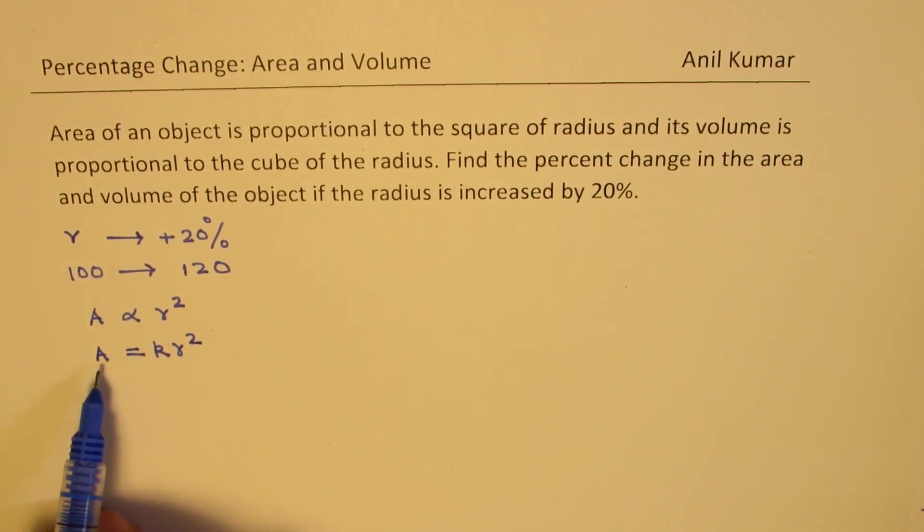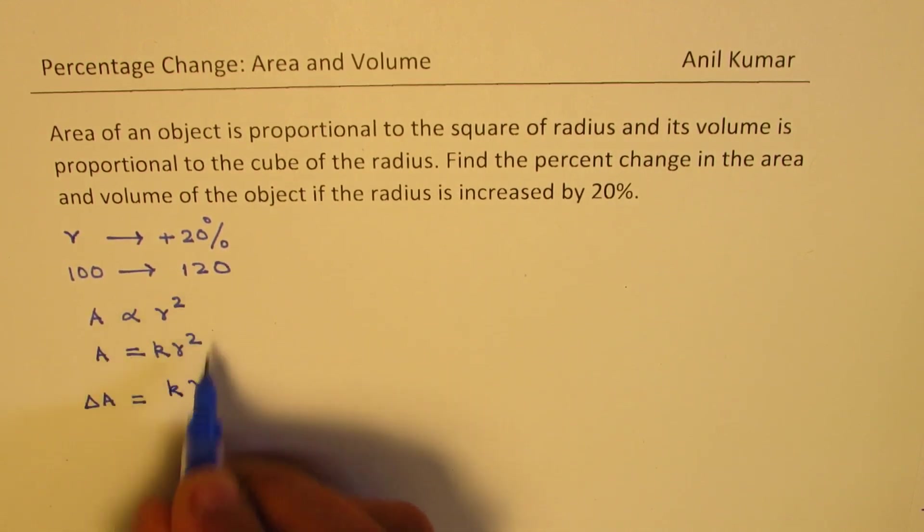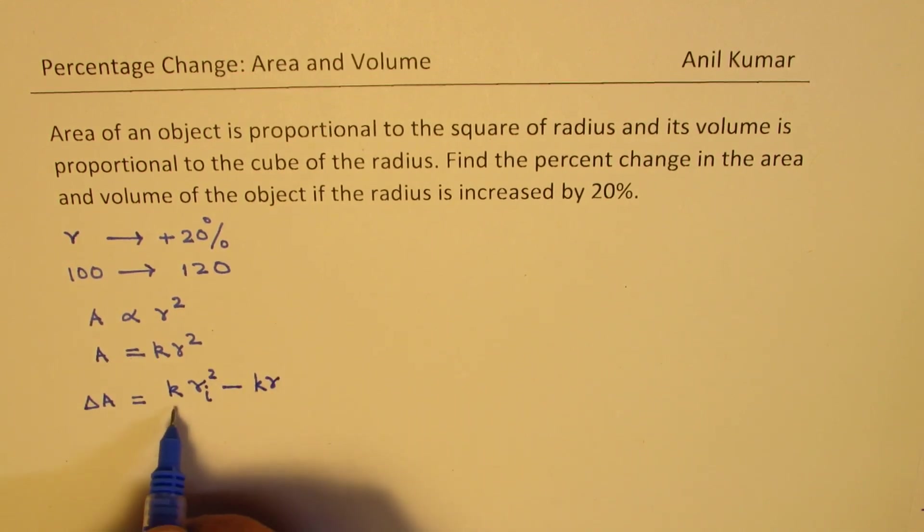Now if I have to find the percentage increase in the area then how am I going to find? So I need to find change in area basically. So change in area will be final minus initial. So constant K remains same always. So we say always percent area change will be K will be a constant. R what has been increased? Let's say increased value. Square minus K times what was R already there.